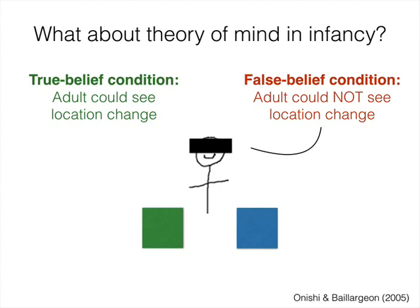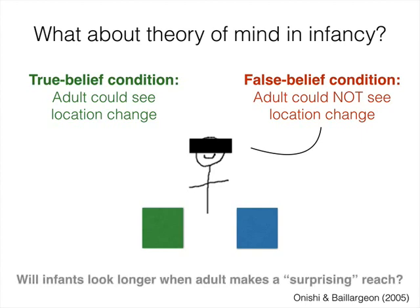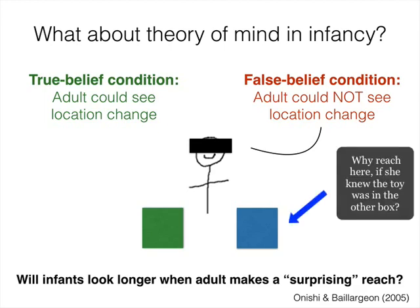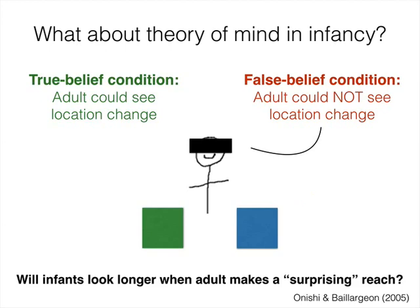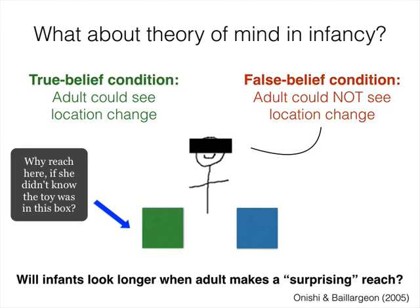In the test phase, infants either saw the adult reach into the box where the toy was or was not located. The key prediction is that infants should look longer when the adult performs a surprising action, either by reaching to the incorrect location in the true belief condition, even though she knew where the toy was, or by reaching to the correct location in the false belief condition, even though she had not seen the toy being moved there.